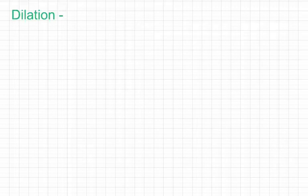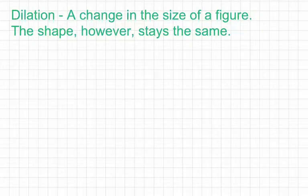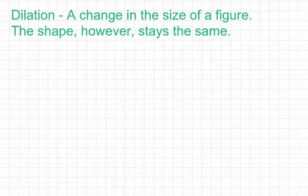Our first vocabulary word is based on the title of the lesson, which is the term dilation, defined as a change in the size of a figure. The shape of the figure, however, will stay the same. So anytime you have two figures that are the exact same shape but are different sizes, that's because of a dilation.